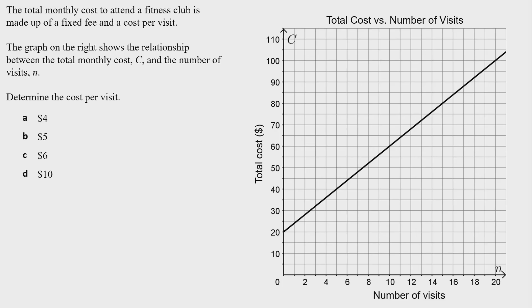To find the cost per visit, we'll use two points on the graph and look at how the cost changes from one point to the next. We try to find points that we can read easily. At the beginning of the graph, we have a nice point that falls right on the grid line at 20, so we'll use that as our first point.